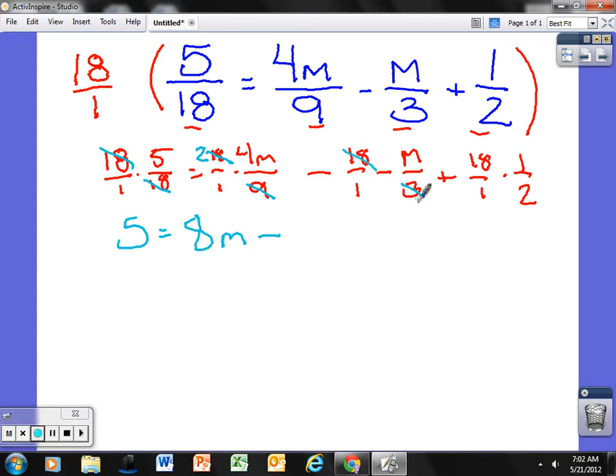Okay, common factor here is 3. 3 goes into 18 six times so I have 6m plus common factor here is 2. This leaves me with a 9. 9 times 1 is 9.